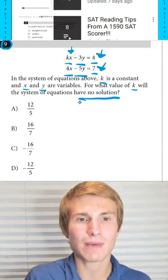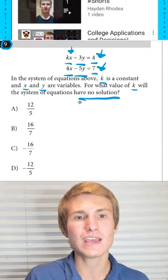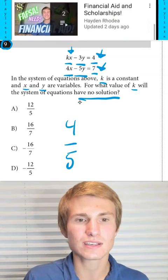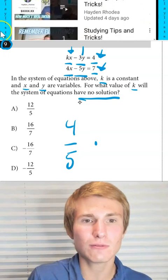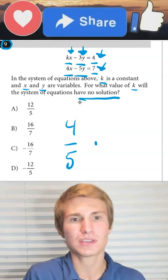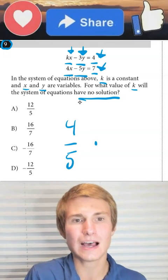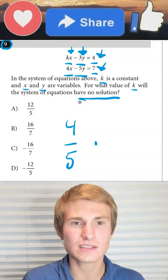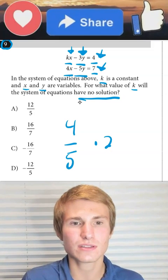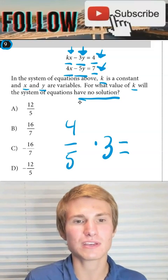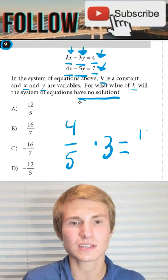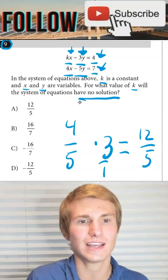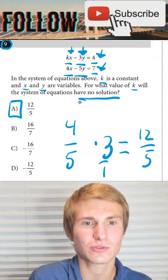Since we have a minus 5y and a 4x, we have to multiply by 4 fifths times our 3y up here on that top equation in order to solve for k. So we're going to do 4 fifths times 3. We get 3 times 4, that's going to give us 12. We'll have 12 over 5 as our correct answer, and that's going to be answer choice A.